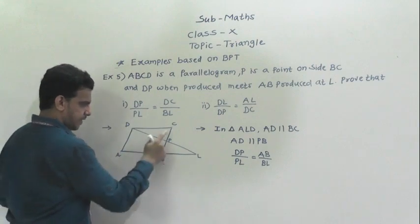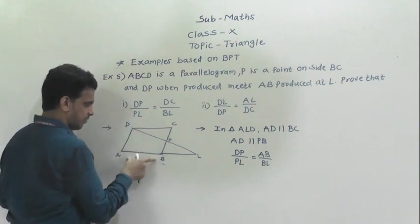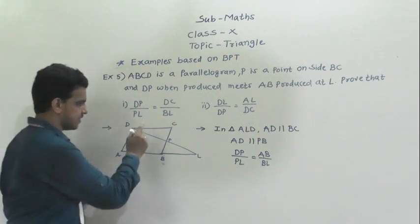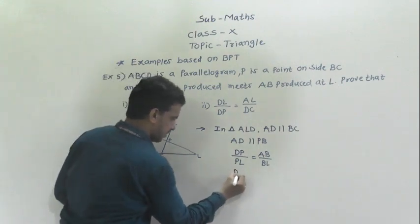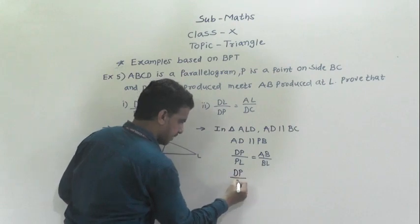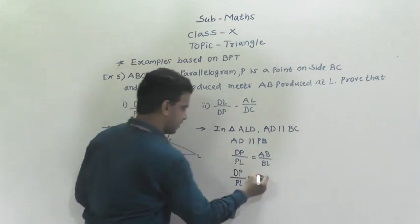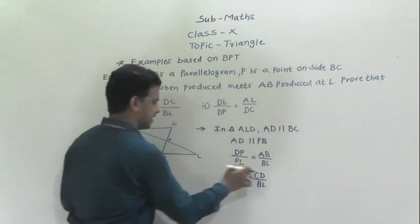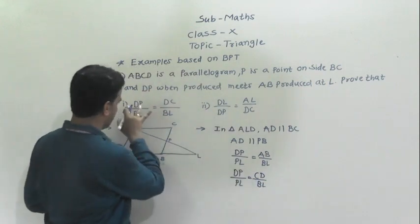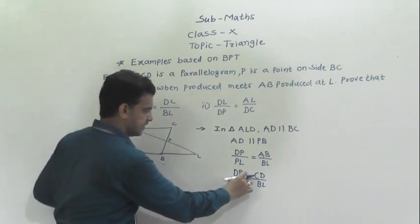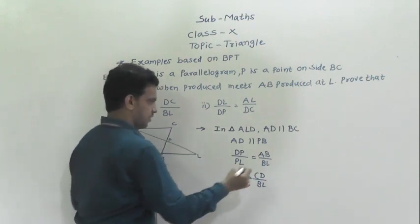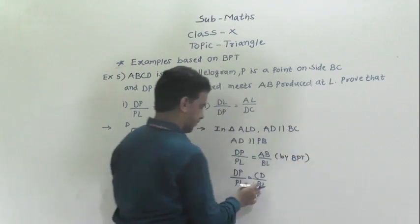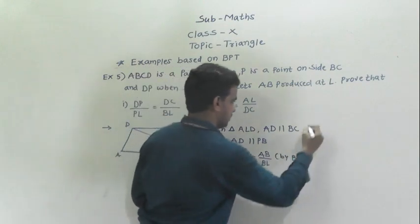We know ABCD is a parallelogram, so instead of AB we can use DC because opposite sides of a parallelogram are equal. So we can write DP by PL is equal to CD by BL, or DC by BL. This gives us the first result: DP by PL is equal to DC by BL.